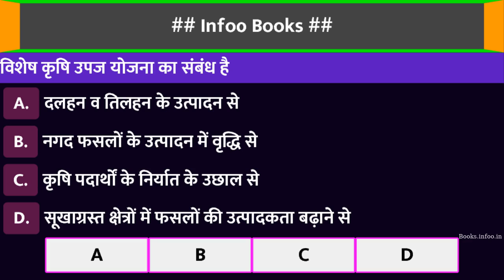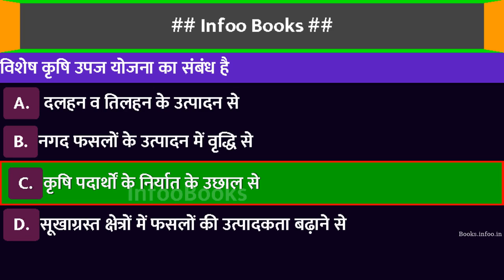विशेष कृषि उपज योजना का संबंध है। Option A: दलहन व तिलहन के उत्पादन से। Option B: नगद फसलों के उत्पादन में वृद्धि से। Option C: कृषि पदार्थों के निर्यात के उचाल से। Option D: सूखा ग्रस्त क्षेत्रों में फसलों की उत्पादकता बढ़ाने से। सही विकल्प है: कृषि पदार्थों के निर्यात के उचाल से।